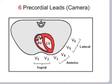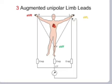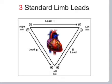Precordial leads: V1 and V2 are septal, V3 and V4 are anterior, and V5 and V6 are lateral. Augmented unipolar limb leads are AVR, AVL, and AVF. Standard limb leads: Lead I has positive on the left arm and negative on the right arm; Lead III has positive on the left leg and negative on the left arm.